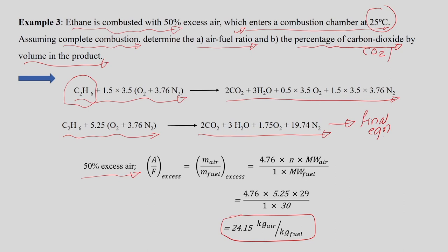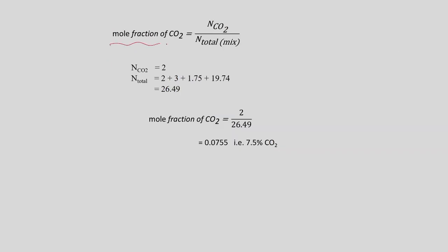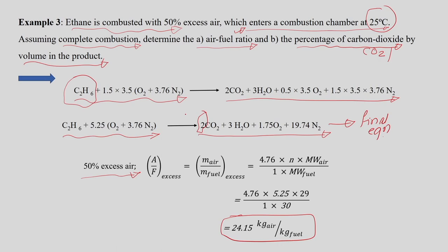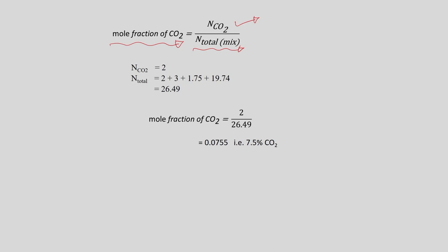Now we calculate the percentage of CO2 in the flue gas. The mole fraction of CO2 equals the number of moles of CO2 in the product gas divided by the total moles of product gas. There are 2 moles of CO2 in the product. The total mole mixture: 2 CO2 + 3 H2O + 1.75 O2 + 19.74 N2 ≈ 26.49 total moles.